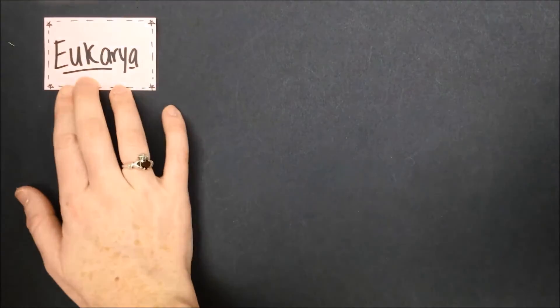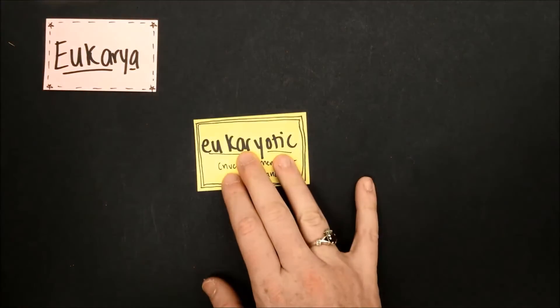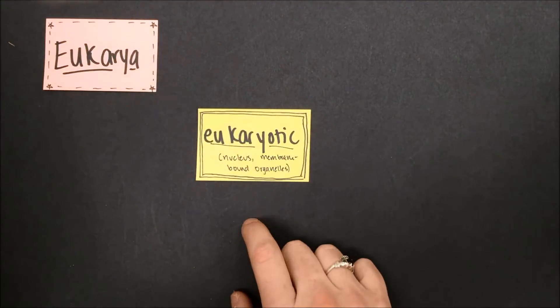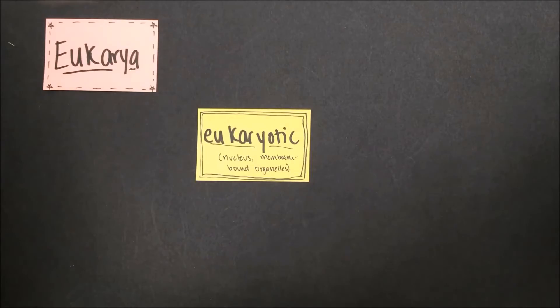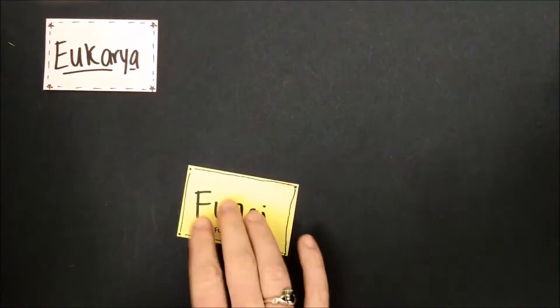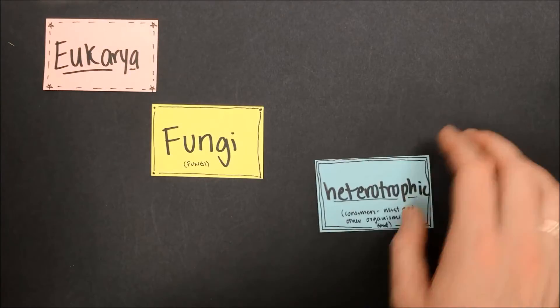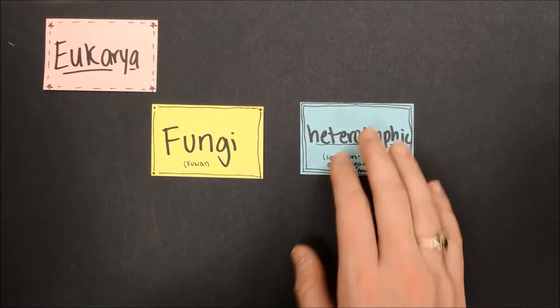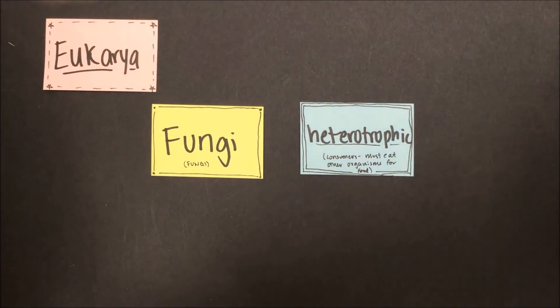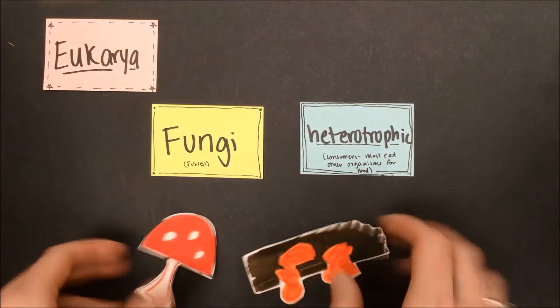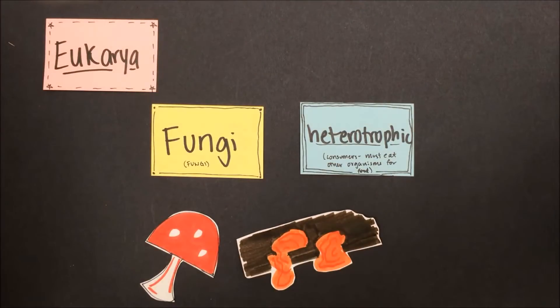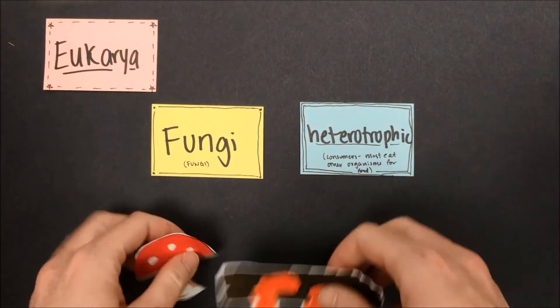In the domain eukarya there are four kingdoms. All of them are eukaryotic, which means that they have a nucleus and membrane-bound organelles. Fungi are heterotrophs, meaning that they cannot make their own food. They grow on what they eat, often causing it to decompose.